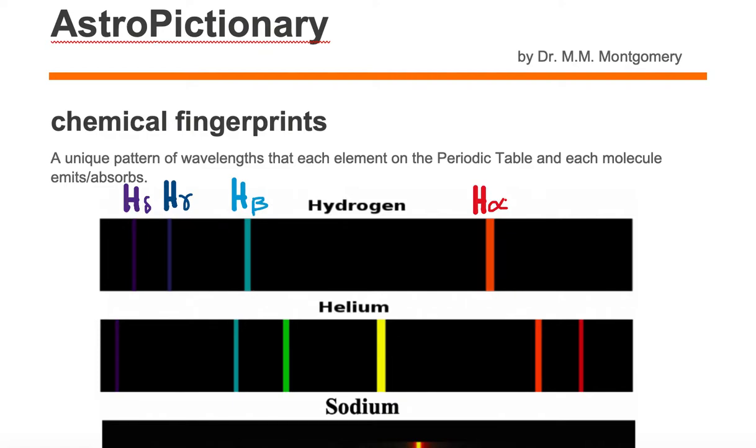Chemical fingerprints are a unique pattern of wavelengths that each element on the periodic table and each molecule emits or absorbs.